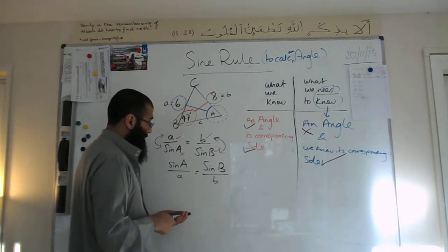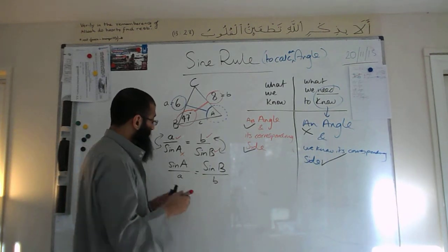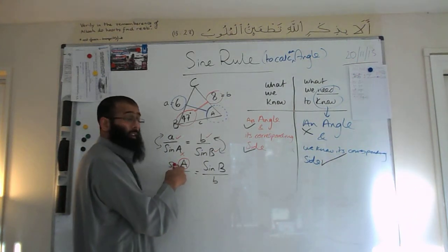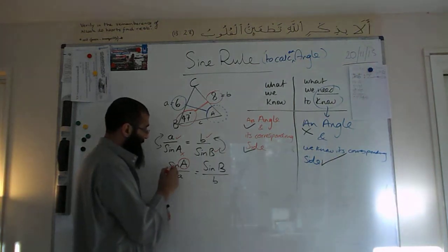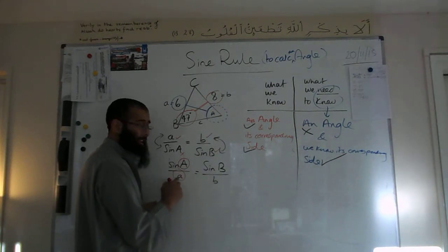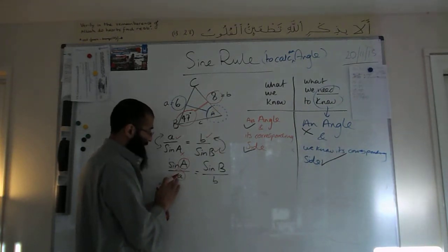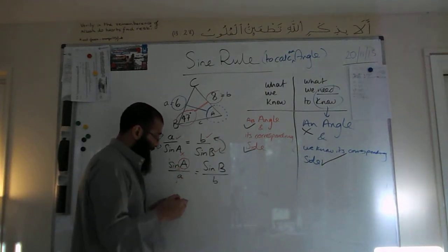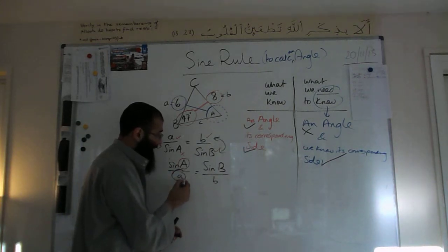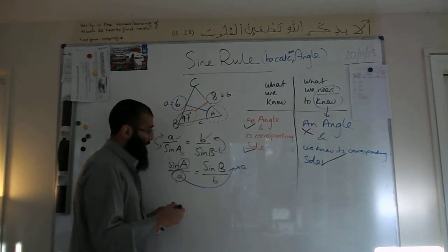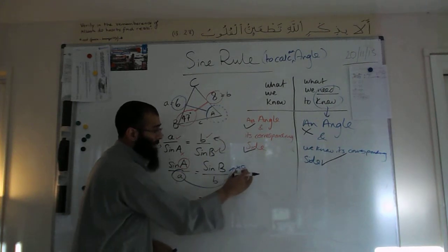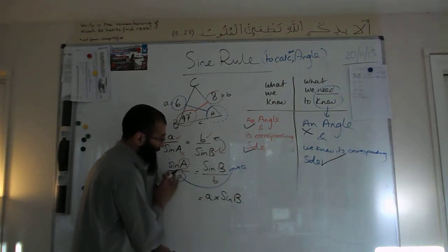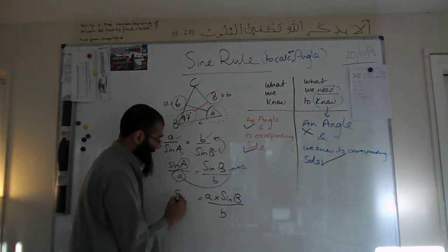Mathematically we are allowed to do that. Now we need to put the values in and do some rearrangement — we need to make A the subject. A has a function of sine acting on it: that's our first action. And then it's been divided by a — that's our second action. When we have two actions and have to solve the equation, we always move the last action first. So we're going to move the 'divide by a' first, giving us a times sine B over b is equal to sine of big A.